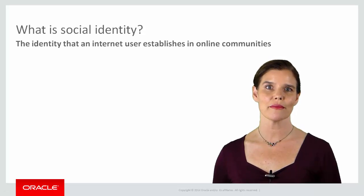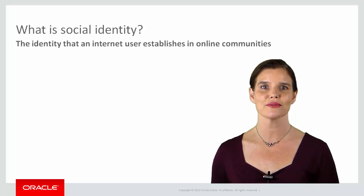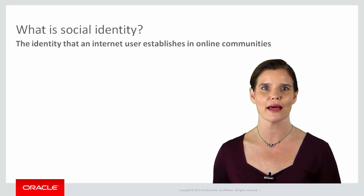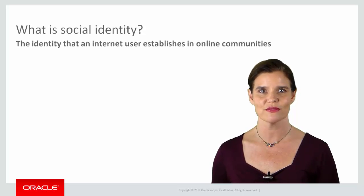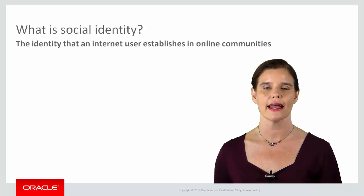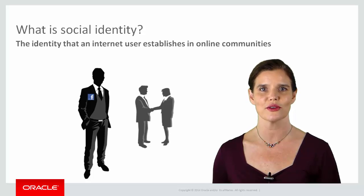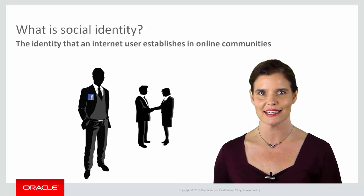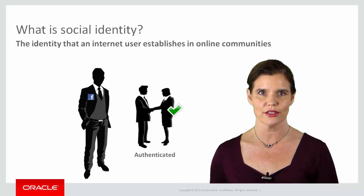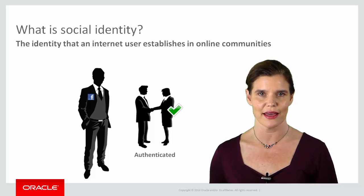In the demo, you saw a MAF application that allows users to login by using their Facebook credentials. Your Facebook identity is one example of a social identity. A social identity is the identity that an internet user establishes in online communities such as Facebook that allow users to develop an internet persona. But why would you trust that people are who they say they are simply because they have social identities? It's a bit like being introduced by a mutual friend. When your mutual friend introduces you to an unknown person, you trust that the unknown person's identity is authentic.